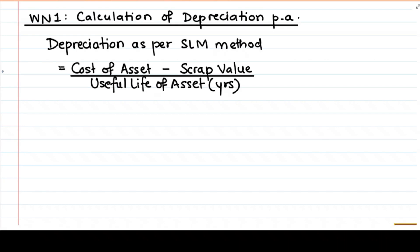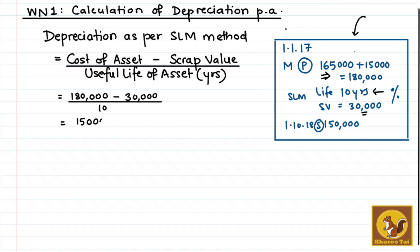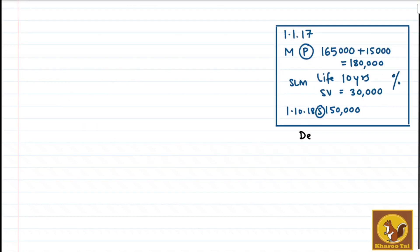Working Note 1: Calculation of depreciation per annum. We will use the SLM formula — depreciation as per SLM method is cost of asset minus scrap value, divided by useful life of asset in years. Cost of asset is 1,80,000 minus scrap value 30,000 divided by useful life 10 years. This gives us 1,50,000 divided by 10, which is 15,000. So 15,000 is the depreciation per annum.